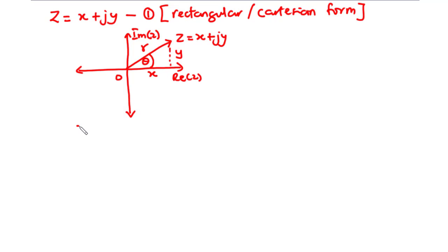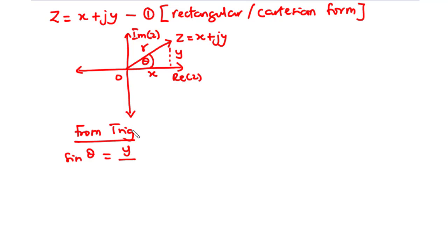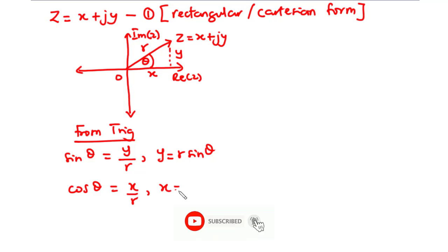Focusing on this triangle and using trigonometry: sine theta equals opposite over hypotenuse, so that is y over r, which means y equals r sine theta. Similarly, cos theta equals adjacent over hypotenuse, so that is x over r, which means x equals r cos theta.